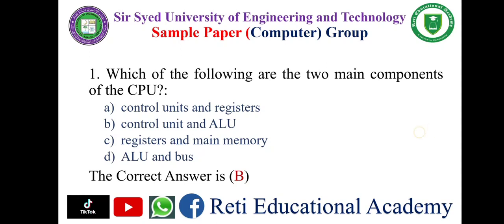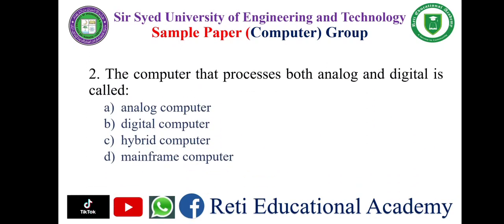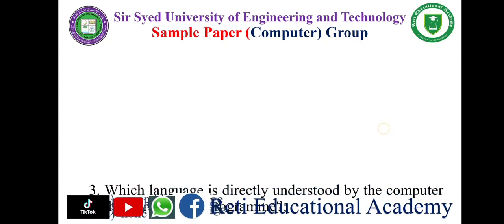Question number two: The computer that processes both analog and digital is called? A) Analog computer, B) Digital computer, C) Hybrid computer, D) Mainframe computer. The correct answer is C: Hybrid computer.